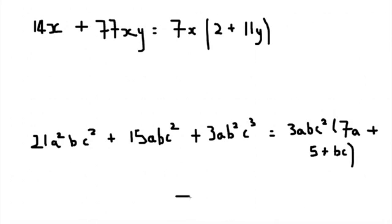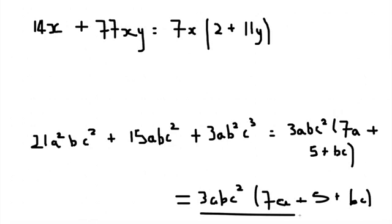So, if we just write that underneath here. We can say three a b c squared. Seven a. Oops. Sorry. That's very bad. It's kind of hard to write. Harder than you would think. Plus five. Plus b c. So, that's not very neat. I'm trying to do it quickly. Just underline that. That is the answer to that one.